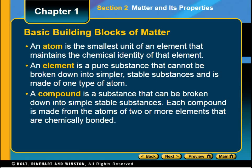The basic building blocks of matter are atoms, elements, and compounds, and one lends itself to the other. Atoms are the smallest part of any element that maintains the properties of that element. You can't break atoms down anymore and still retain the properties of that element. Atoms are elements — we have 114 elements on the periodic table and each one is a different type of atom. They all have a pure makeup, cannot be broken down into smaller states, and are made up of one atom.